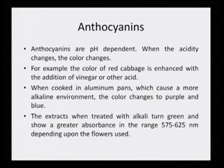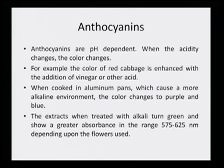Anthocyanins are pH dependent. When the acidity changes, the color changes. For example, the color of red cabbage is enhanced with the addition of vinegar — which is dilute acetic acid. When cooked in aluminum pans, which cause a more alkaline environment, the color changes to purple and blue. These are indications that anthocyanins are truly pH dependent — any kind of alteration in the acidity or basicity of the solution will produce a change in the extract.